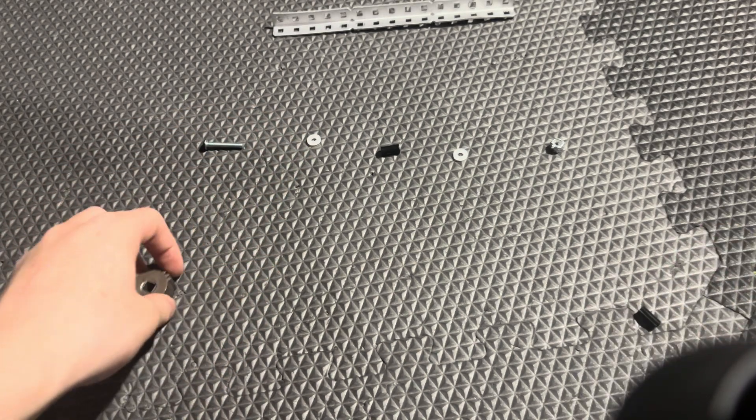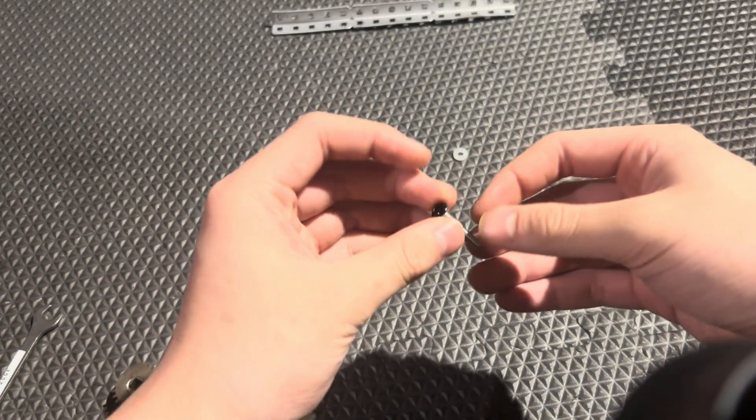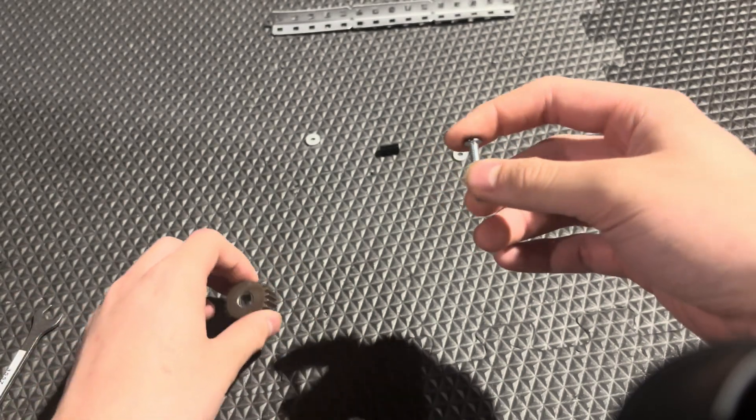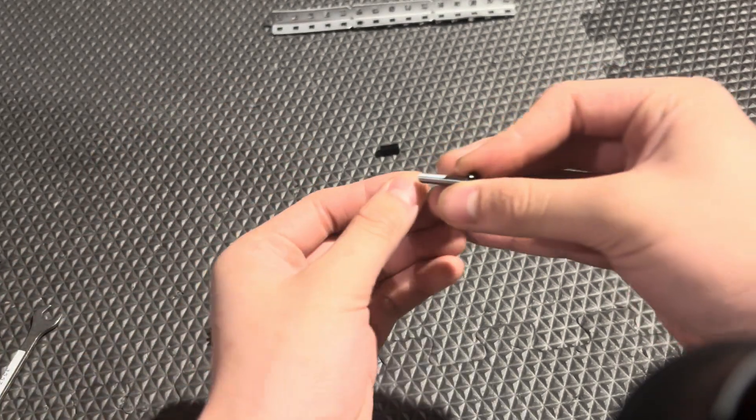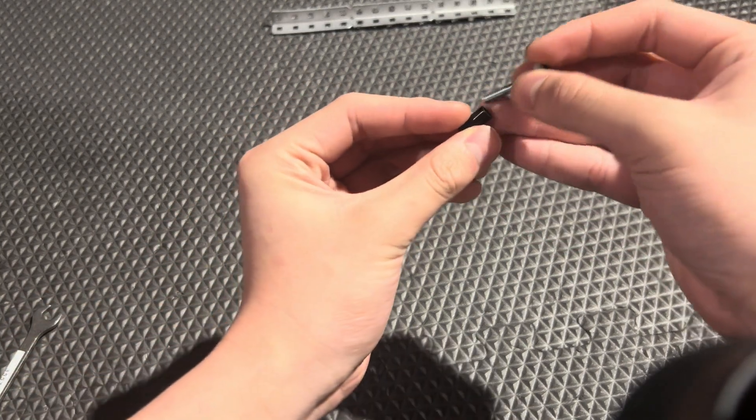To start off, obviously, you want to take your shaved spacer, your screw, and you want to first put on a washer. And then, put on the spacer.